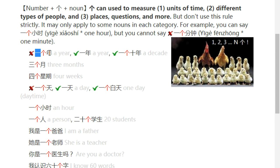You cannot say 一个天. But you can say 一个白天 (in the daytime). 一个小时 (one hour). 一个人, 二十个学生 — one person, twenty students.